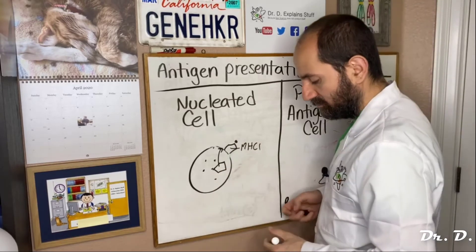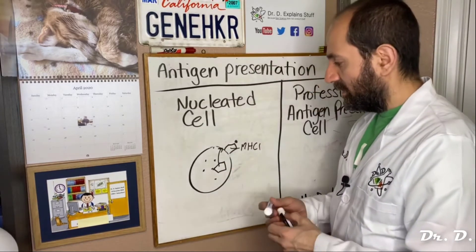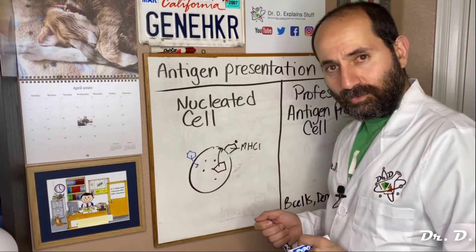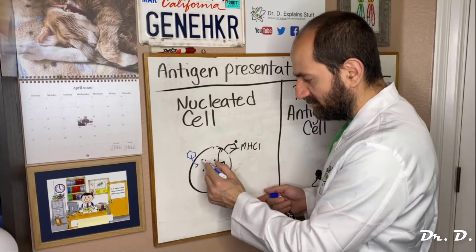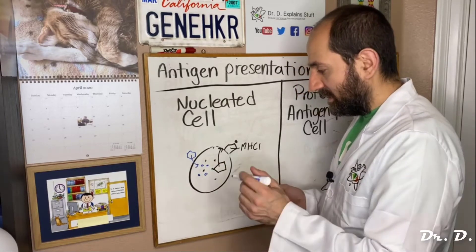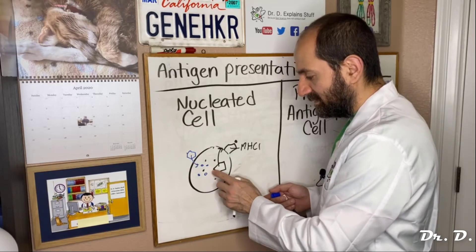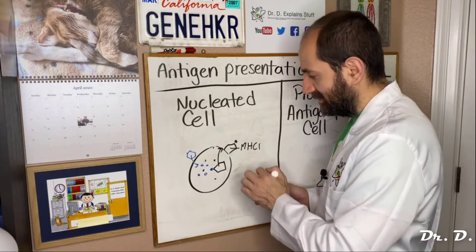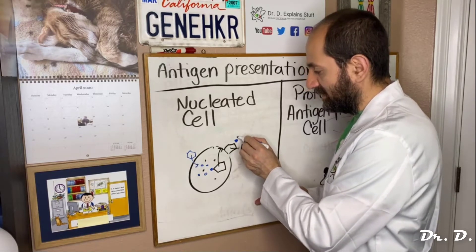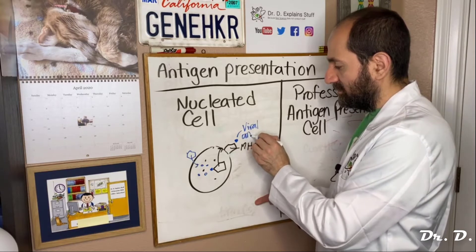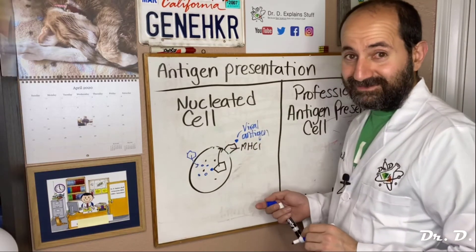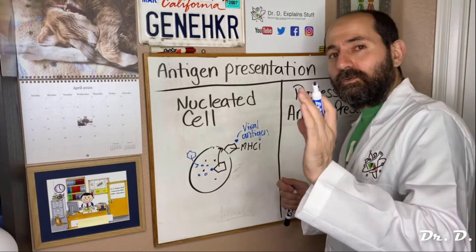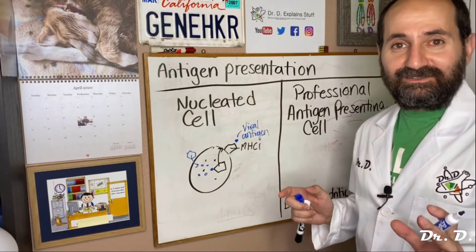But what if this cell got infected by a virus? The virus made itself at home inside of the cell. If that virus were to make more of itself, it would be making viral proteins. What if MHC1, instead of grabbing a self-antigen and presenting that on the surface of the cell, grabbed a non-self antigen — like a viral antigen? Now what is it presenting on the outside of the cell? A viral antigen. The white blood cells will recognize that viral antigen as non-self.